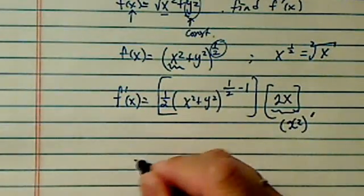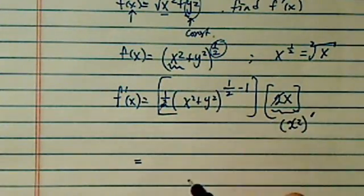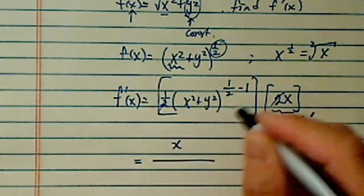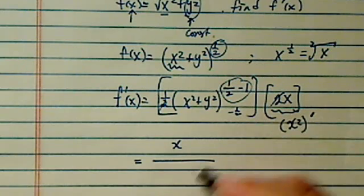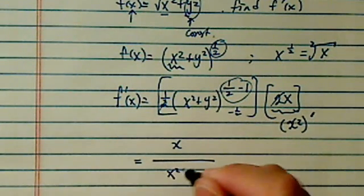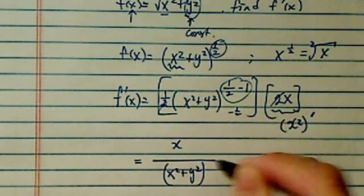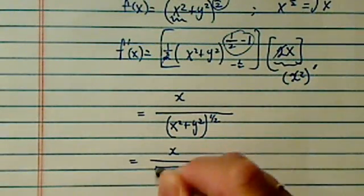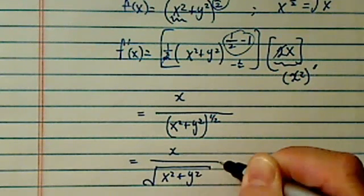Let's simplify a little bit. The 2 and 2 cancel, so we have x on the top. The minus half exponent means that term goes to the bottom — x squared plus y squared to the half. Writing one more step into radical form: x over the square root of x squared plus y squared.